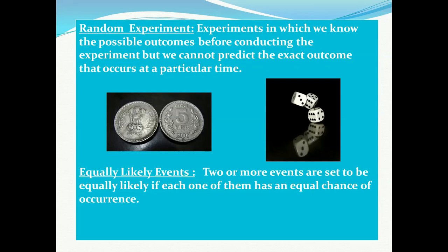A random experiment is an experiment in which we know the possible outcomes before conducting the experiment, but we cannot predict the exact outcome that occurs at a particular time. When you are tossing a coin, you know the possibilities — it will be a head or a tail — but what the final result will be cannot be predicted. The same is the case with a die: all the possibilities are known, but what the final result will be cannot be predicted. This is called a random experiment.